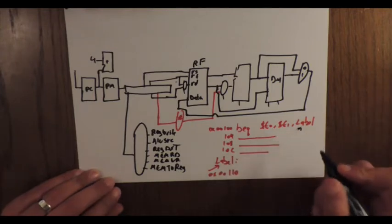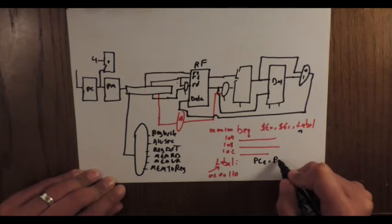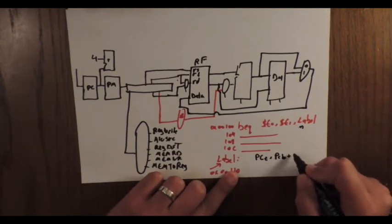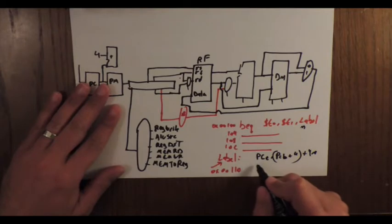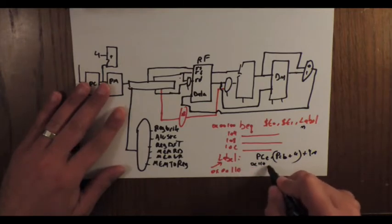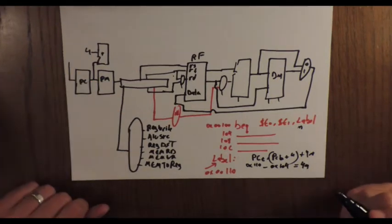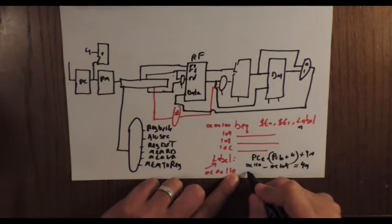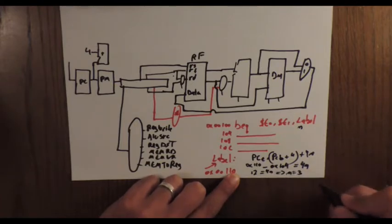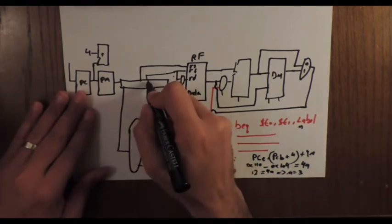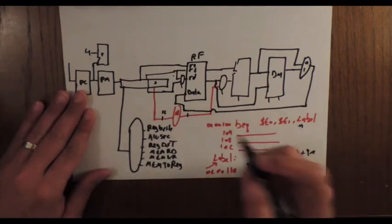To apply the formula, PC target = PC of branch + 4 + 4n. Here, PC target is 0x110, so 0x110 minus 0x104 equals 4n. The result is 12; 12 in decimal equals 4n, which implies n equals 3. So this 3 will be the 16-bit immediate that will be sign-extended and transformed into 32 bits.